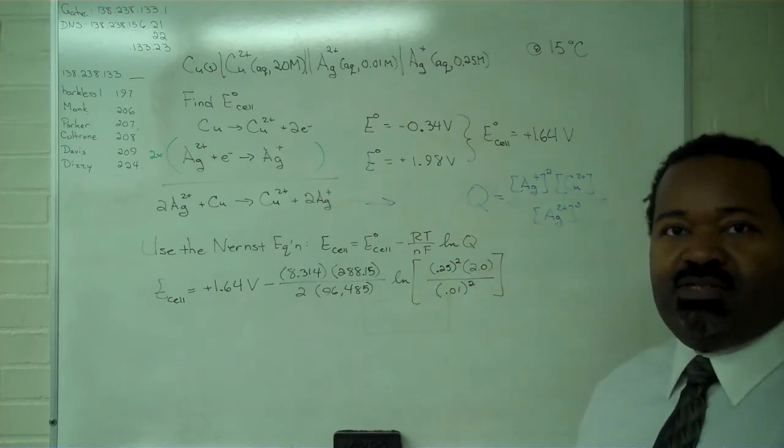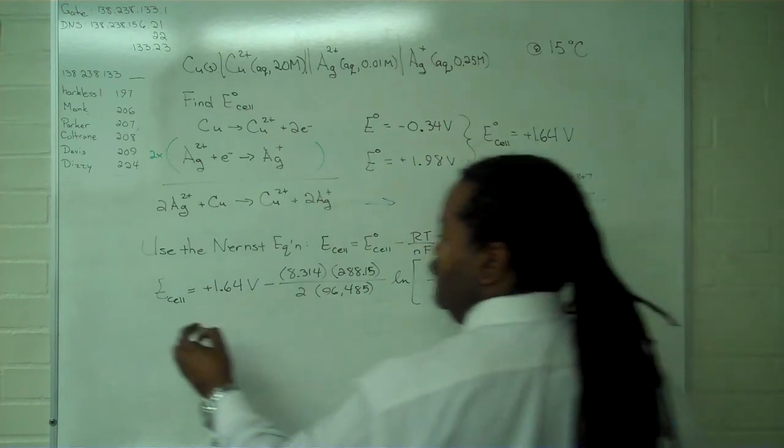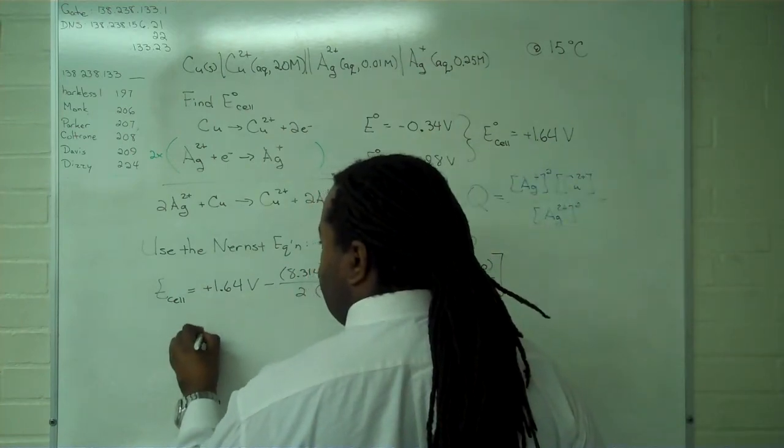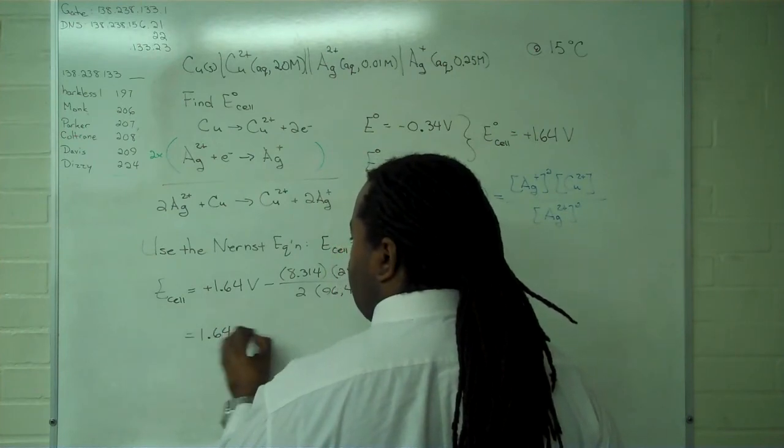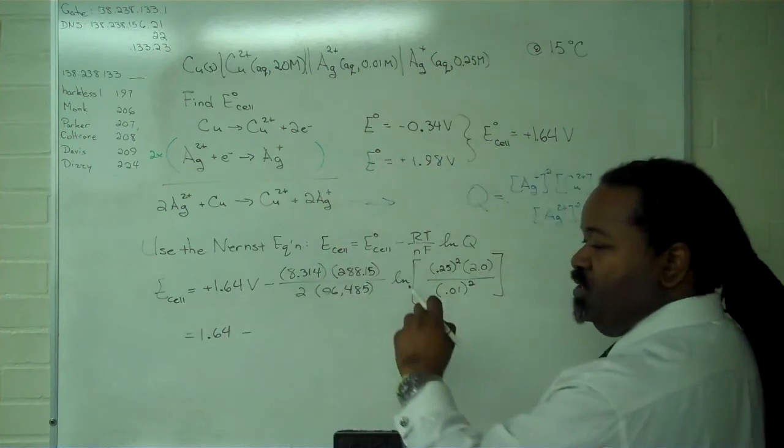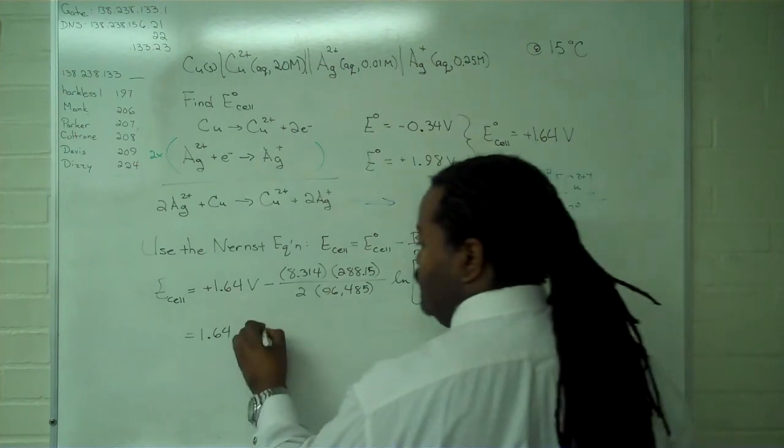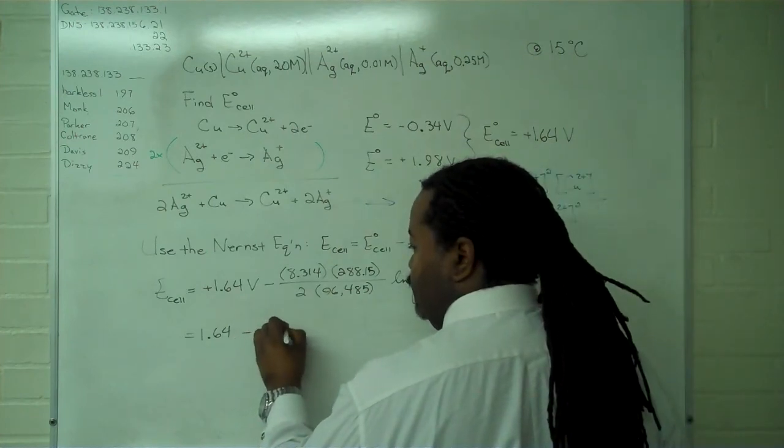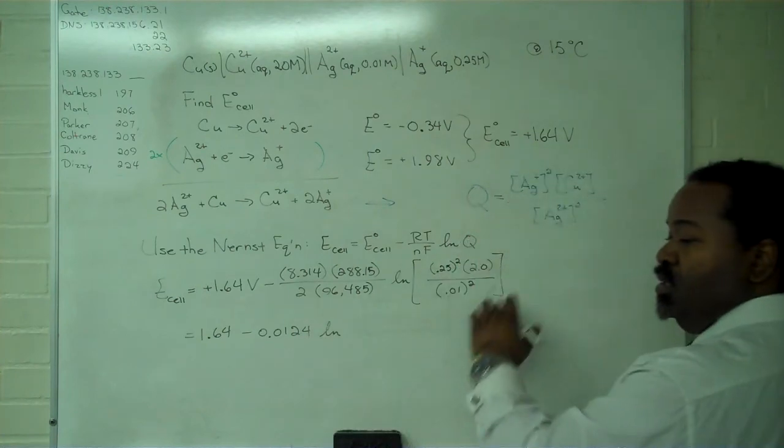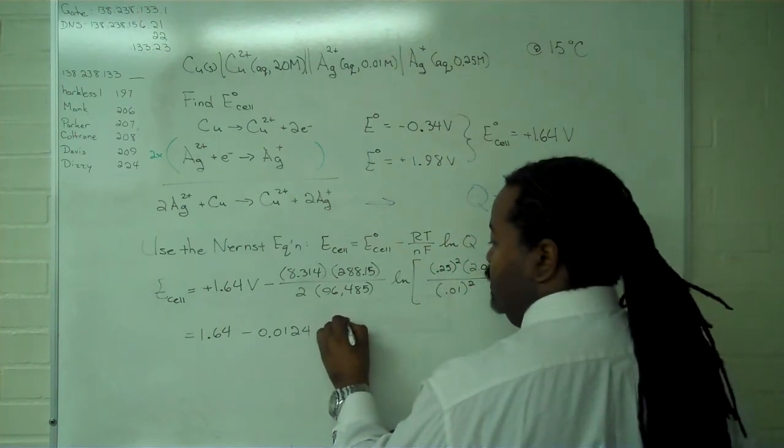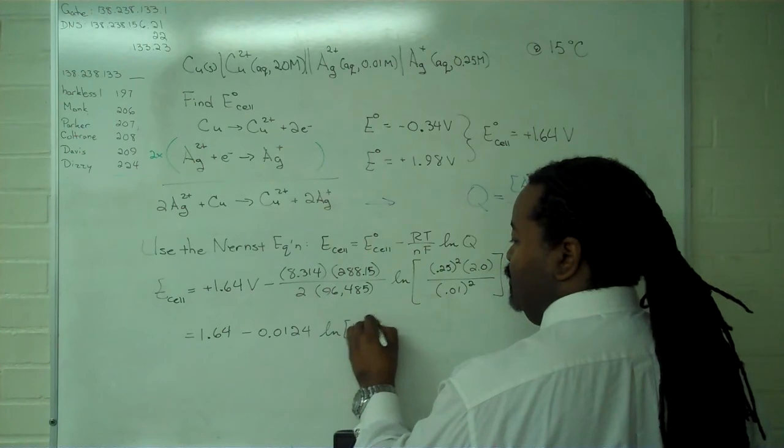So now it's a matter of simplifying all of these factors. We'll do it one step at a time. That's 1.64 volts. All of these factors combine to give us 0.0124 natural log. So now we simplify inside of here, and we get 1,250.